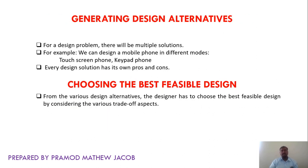Next is generating design alternatives. For a design problem, there will be multiple solutions. For example, we can design a mobile phone in different modes like touchscreen phone, keypad phone, or integrated battery or removable battery mode. Every design solution has its own positives and negatives. So the designer has to finally choose the best feasible design from the various alternatives by considering the trade-off aspects expected by the customer. These are the various phases of the design process.